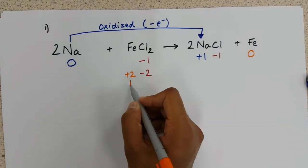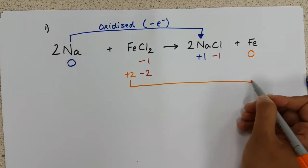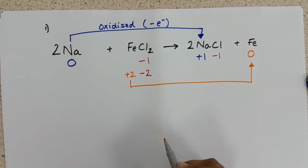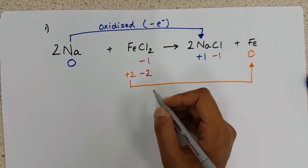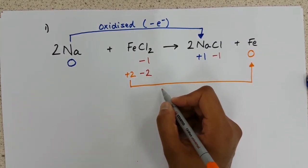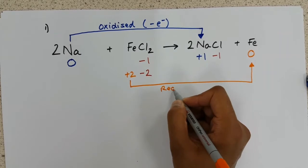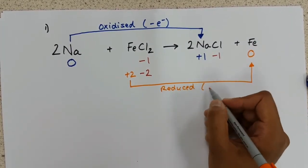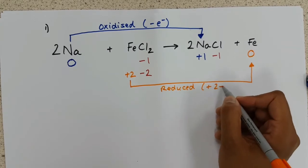Iron has gone from a plus 2 to 0, which tells us it has been reduced. And we know this, as it has become more negative and has gained 2 electrons.